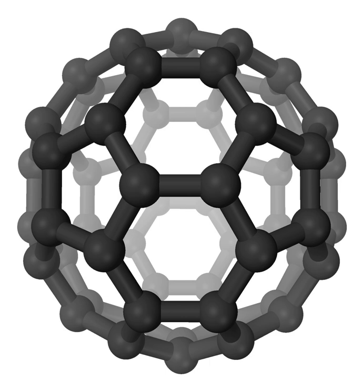In structural formulas of molecules, the hydrogen atoms are often omitted. Compound classes consisting solely of C-H bonds and C-C bonds are alkanes, alkenes, alkynes, and aromatic hydrocarbons. Collectively, they are known as hydrocarbons.